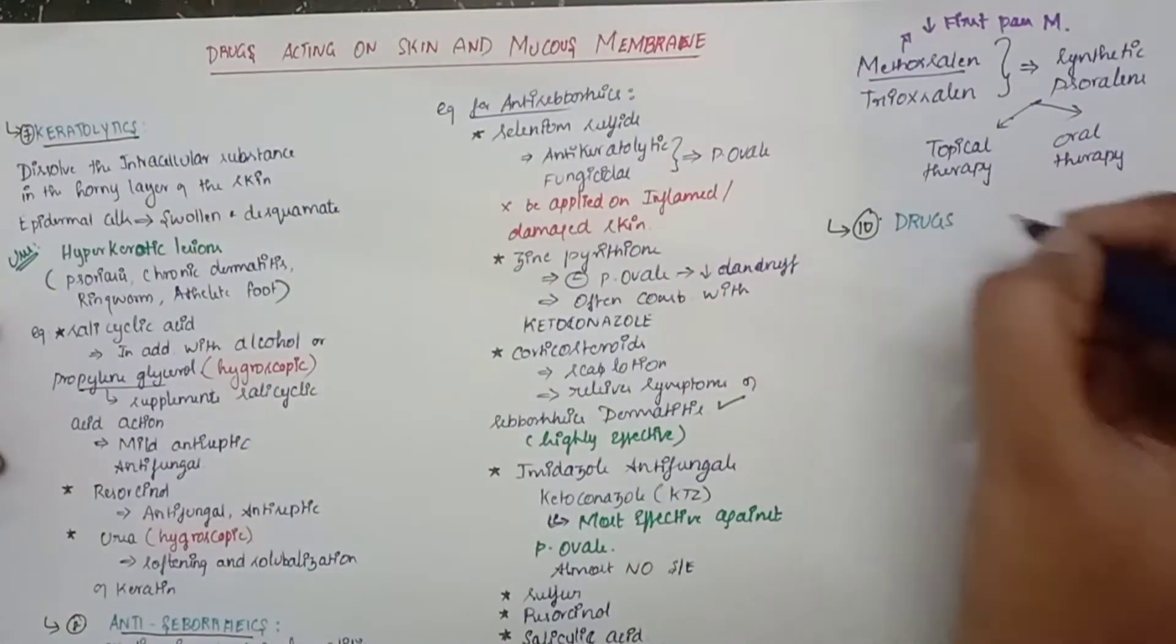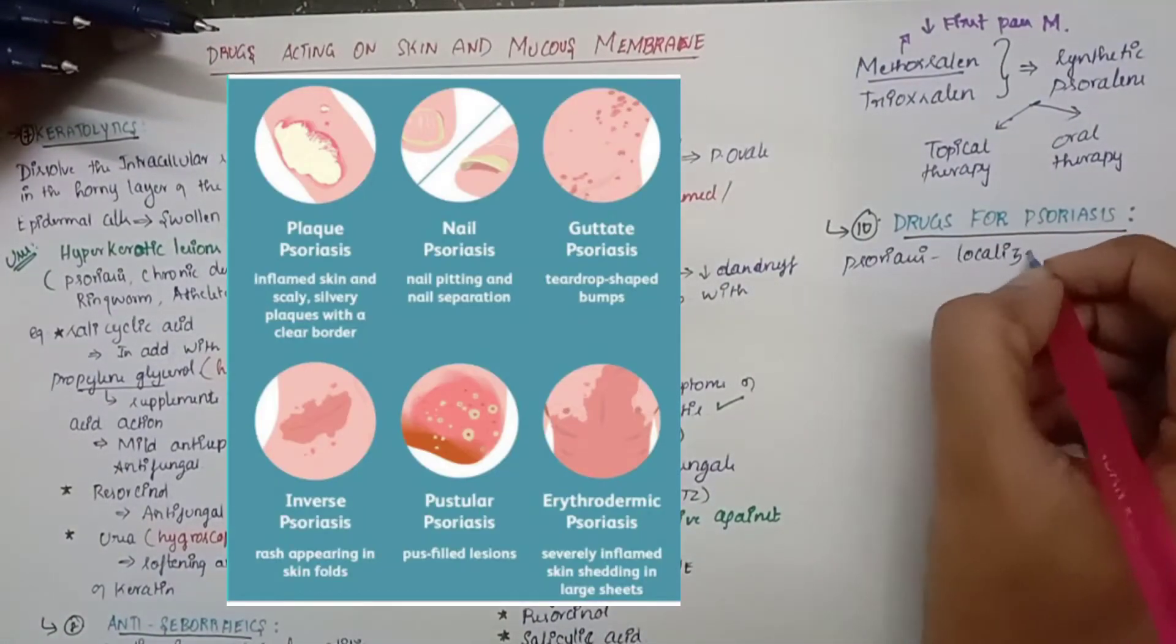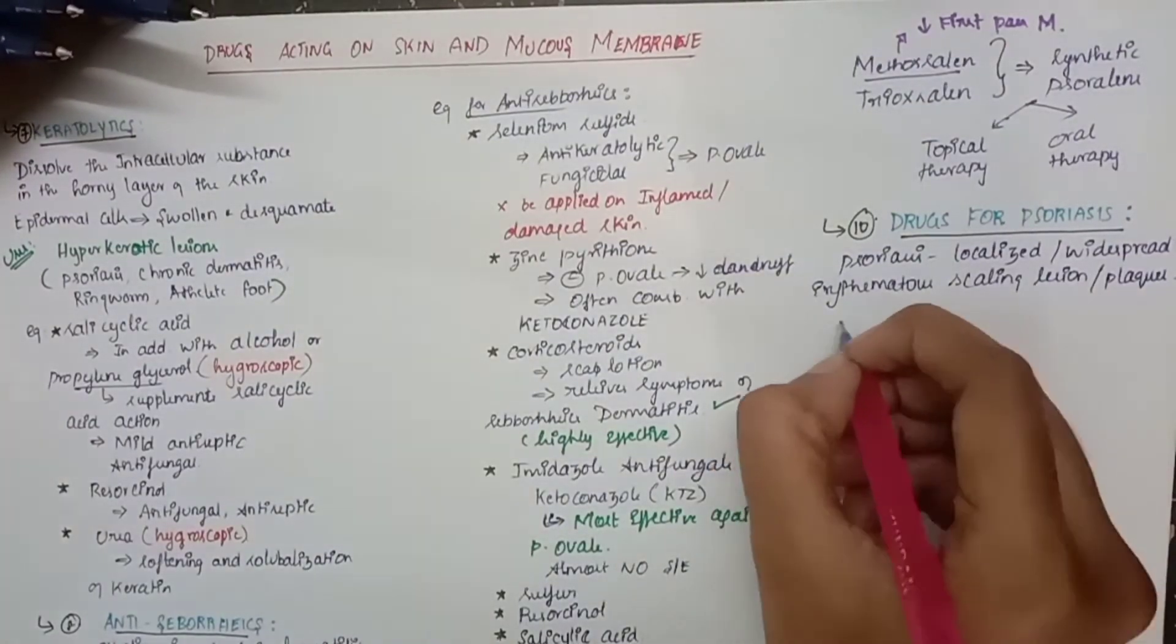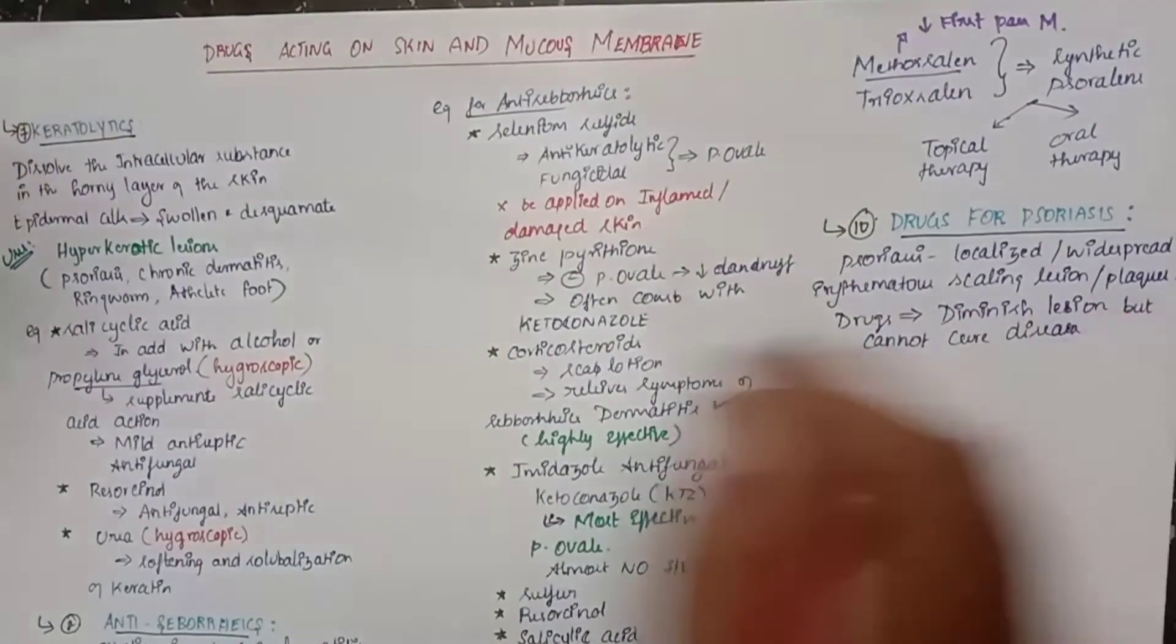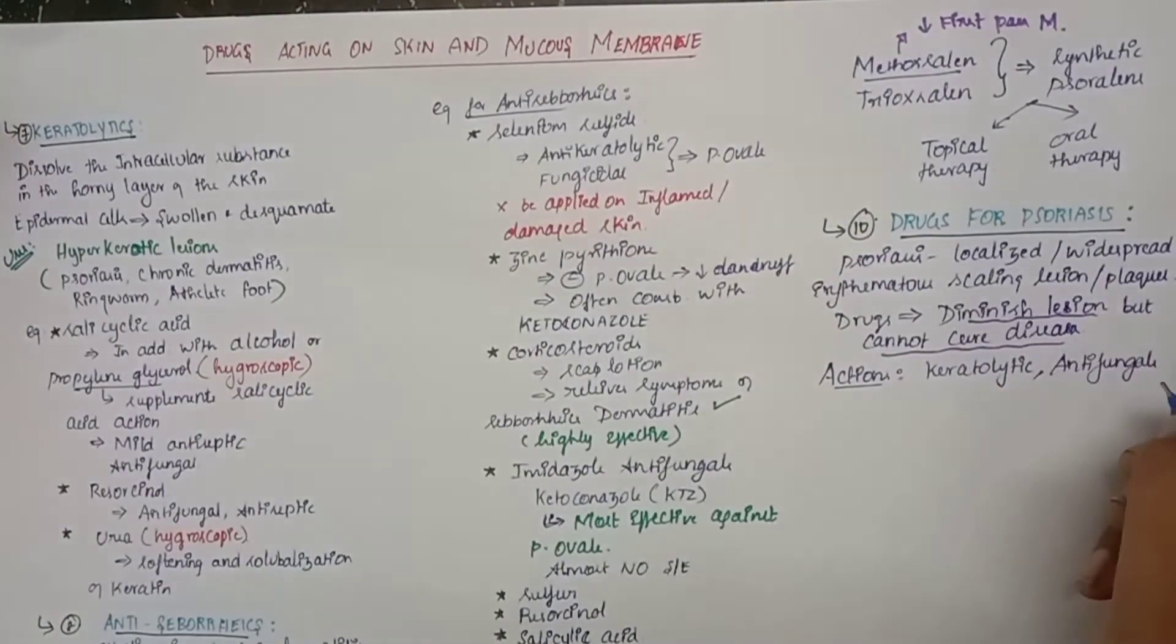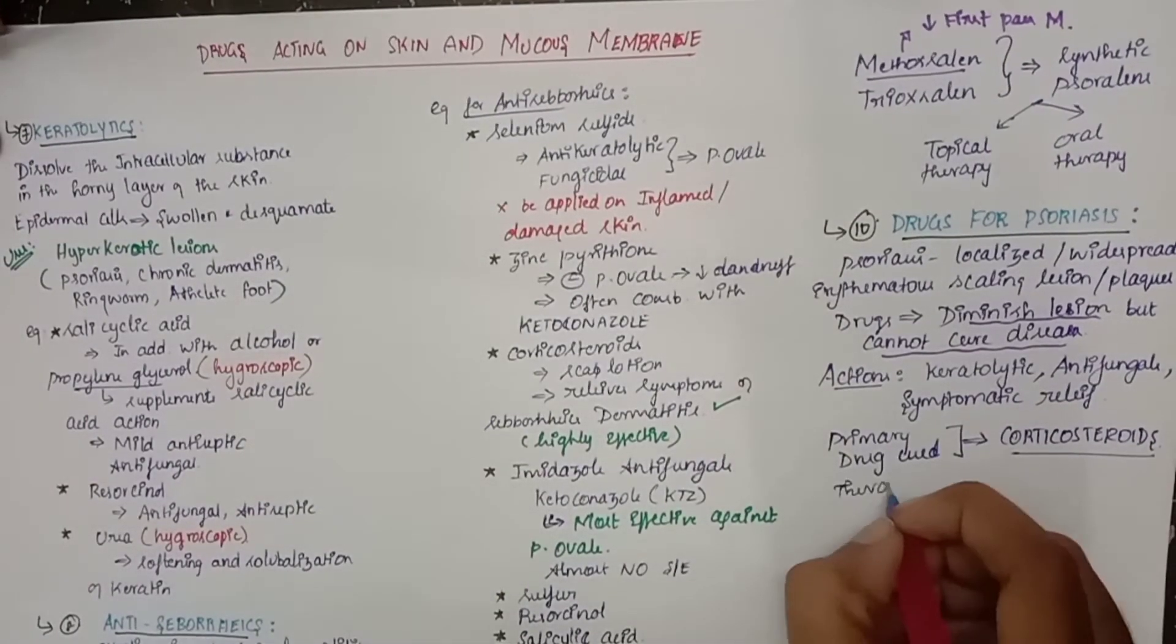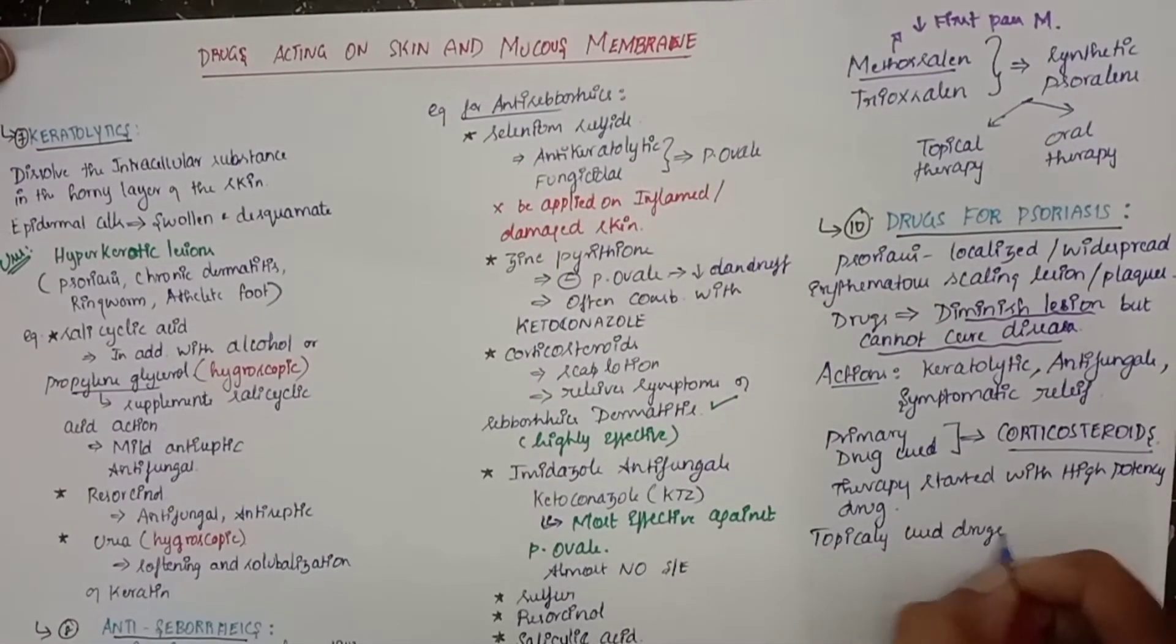The next group of drugs are drugs for psoriasis, which can come as a short note I think. Psoriasis is a localized or widespread erythematous scaling lesion or plaques. The drugs administered for psoriasis will only diminish the lesion but cannot cure the disease. The actions are keratolytic, antifungals, and it also offers a sympathetic relief. The primary drug used in psoriasis is corticosteroids, and the therapy should be started with the high potency drug, that is a steroid.